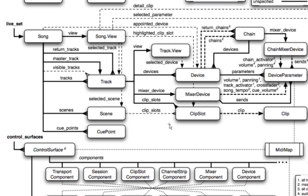Looking at what we have on screen, we have a section of the Live Object Model — I'll link to the full page. It has big boxes called classes, which are large pieces of the model, and little arrows that lead us to different places. Single arrows mean there's only one option, while forked arrows show there are multiple possibilities. For example, tracks has a fork so you can find different tracks within a live set.